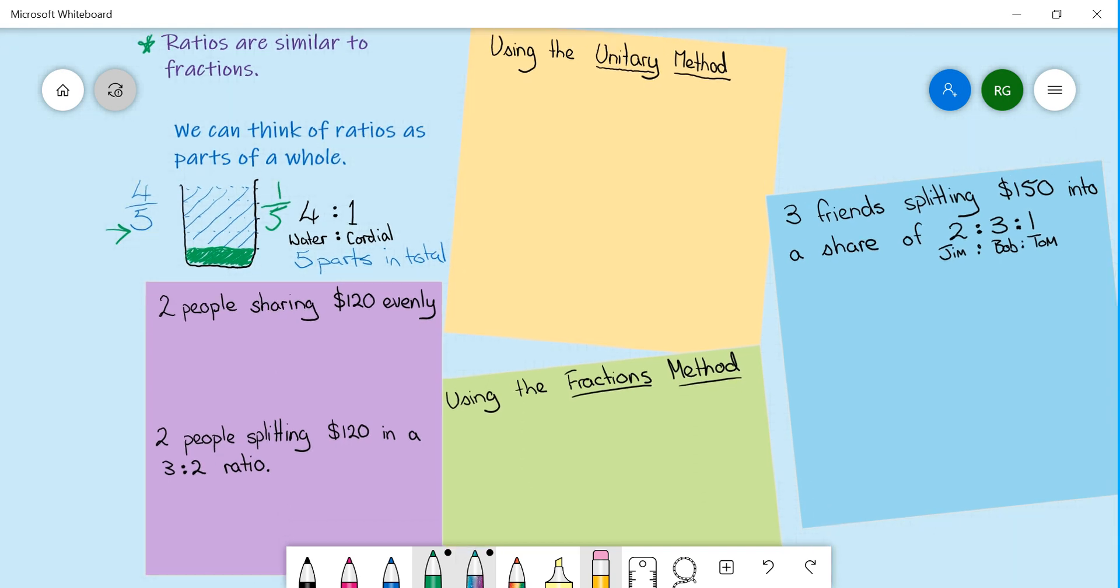So let's do a couple of questions. If I have two people, so we're looking at this one on the purple sticky note. If I have two people sharing $120 evenly, we know straight away that each person would receive $60. That's kind of easy. The reason that works is as follows.